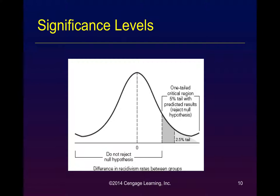This is an example of a one-tailed test. If we were only interested in learning whether or not the intervention was successful, this type of test would be appropriate. However, if the intervention is in fact harmful, this test would not provide any information about that potential finding.